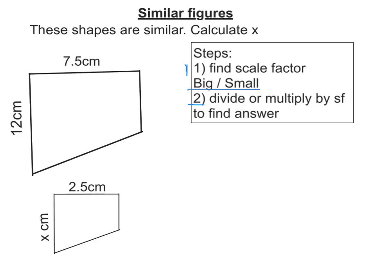For the scale factor of this question, I've got to find two corresponding sides. So that side corresponds to that one, and I do big divided by small. So 7.5 divided by 2.5 gives me 3. So that's my scale factor.